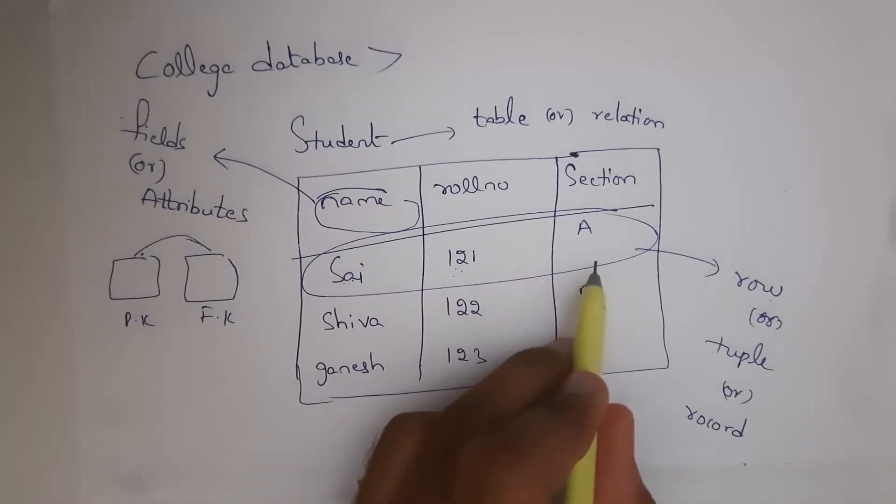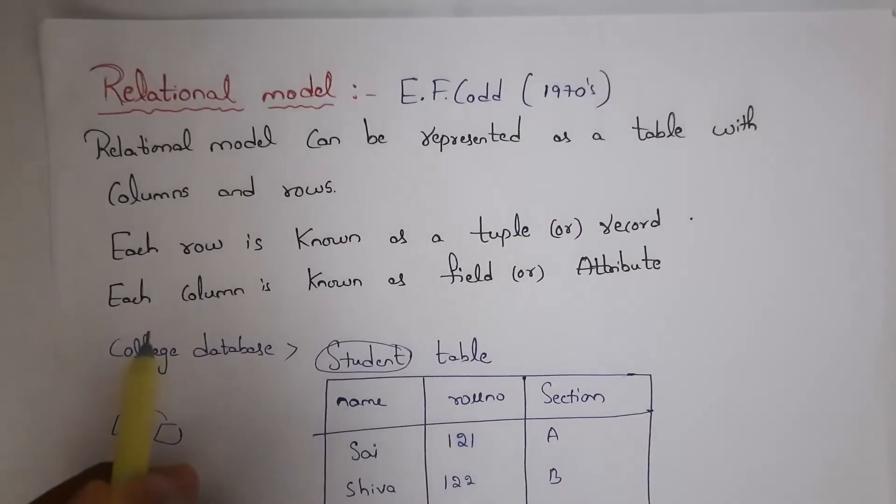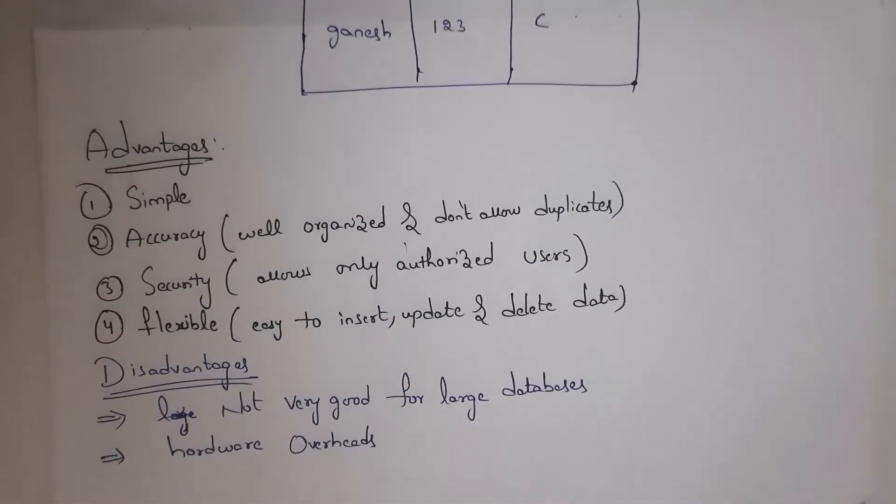Each column is known as field or attribute. These are advantages of relational model.